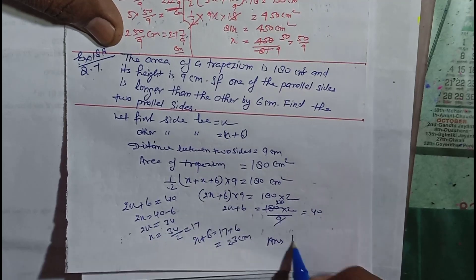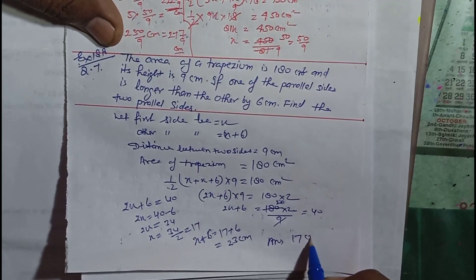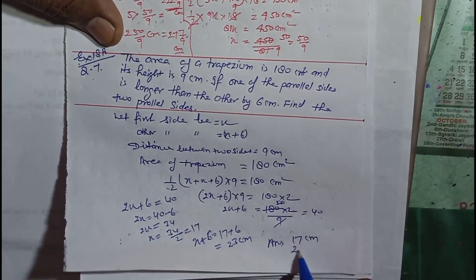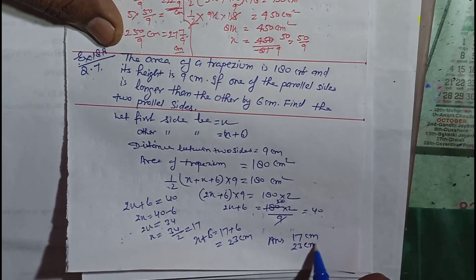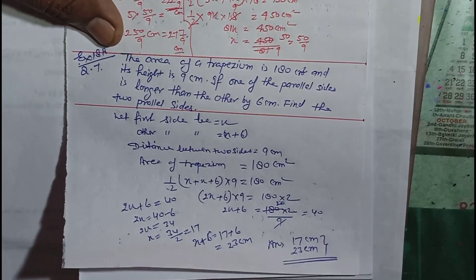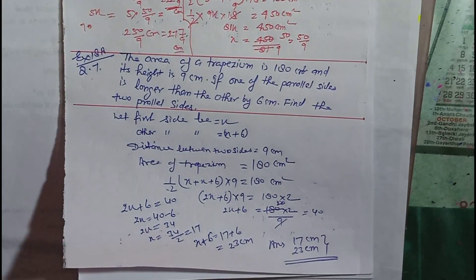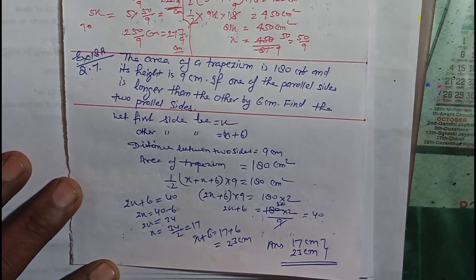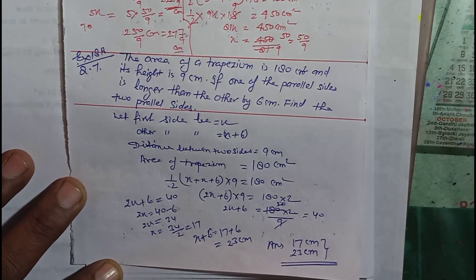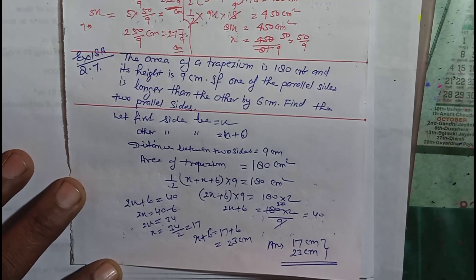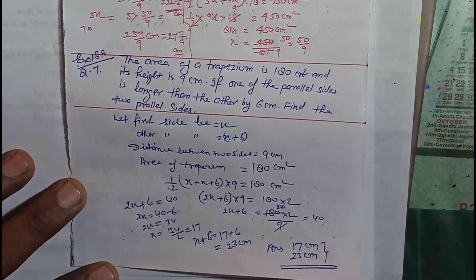Answer mein aap likh denge: first side is 17 cm, second side is 23 cm. Is tarah se beta is question ko solve kar sakte hain. Saare questions aapko bahut ache se samjha gaye honge. Please share karein aur like button ko press karna na bhulen. Thanks for watching.